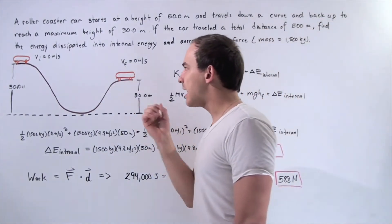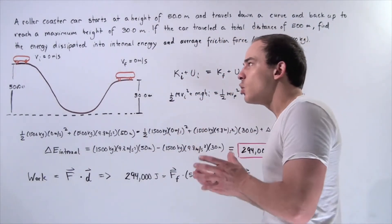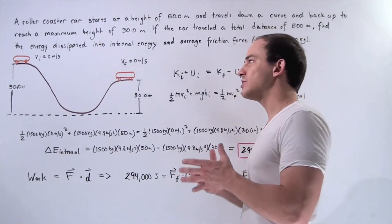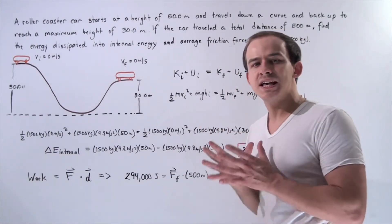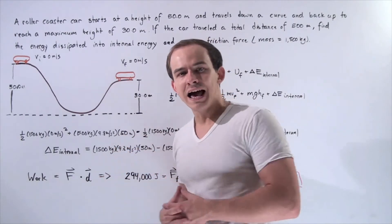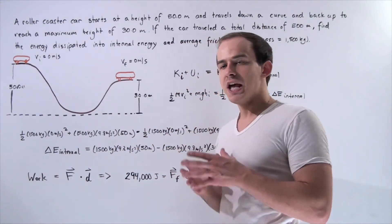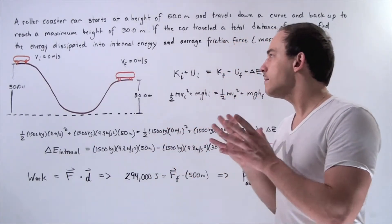Let's examine what happens. Initially, our car begins with no kinetic energy and only gravitational potential energy. At the end, our car ends up with less gravitational potential energy because some of that mechanical energy has been transformed into internal energy, into thermal energy, and we want to calculate what that amount is.